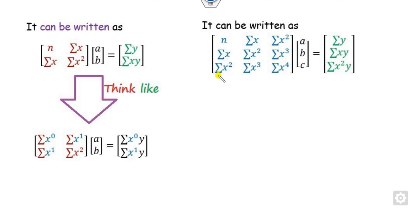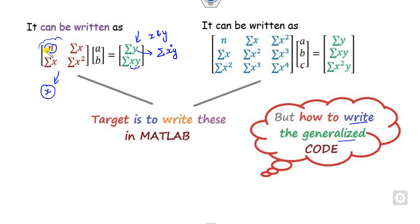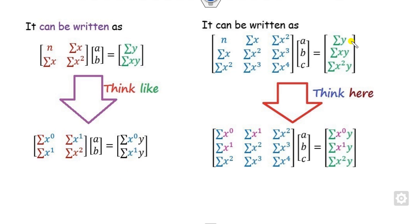In order to think about the generalized code, you have to express each element. On one side are the terms of X and Y, while on the other side are terms dependent only on X. Each element can be written as X raised to some power. For example, you can write a term as X raised to the power 0 into Y for the XY-dependent part, and X raised to the power 0 for the X-only part, then X raised to power 1 and so on.